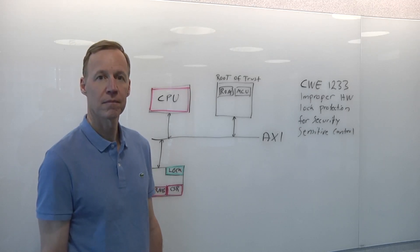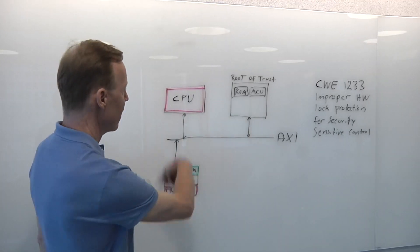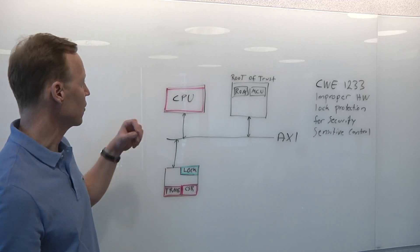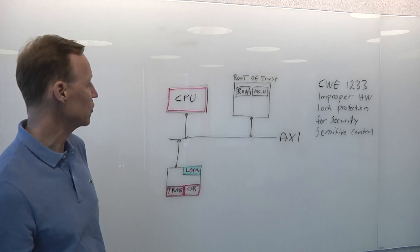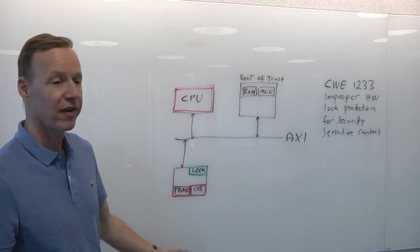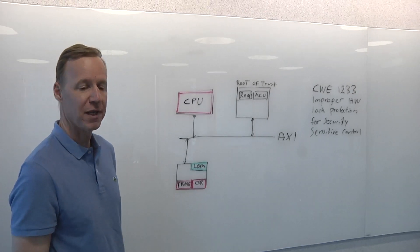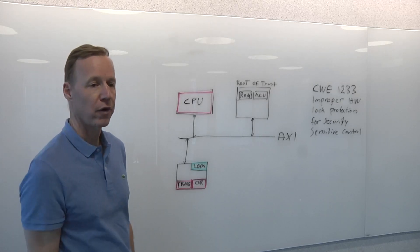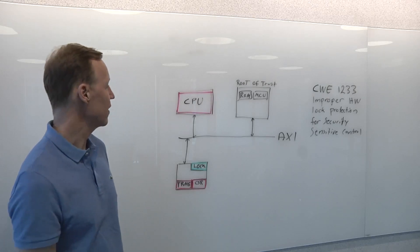So how does this work? What are you trying to show here? So let's look at a specific example here. Here we have a simple SoC. And it's got the hardware root of trust, the CPU, some control status registers, and an AXI interconnect. So the first step we'll do is look at what are our assets in the system. And by assets, it means critical data or control of the device that can change the behavior.